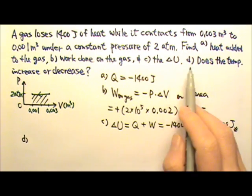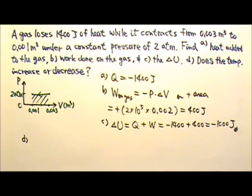And then we want to know whether the temperature increases or decreases. There are at least two ways we can use. One is the delta U is a negative number. That means internal energy decreases. So the temperature must also decrease.